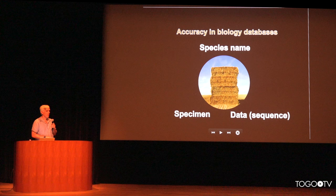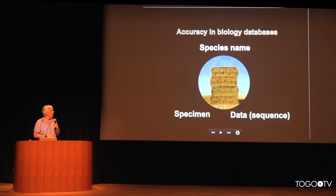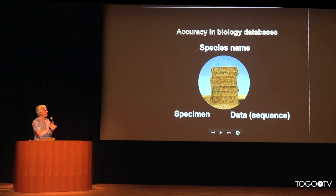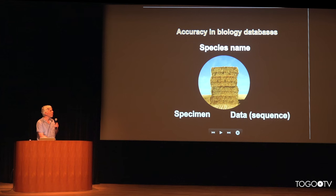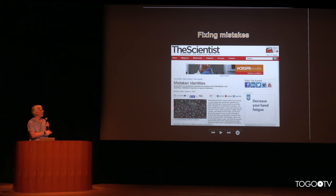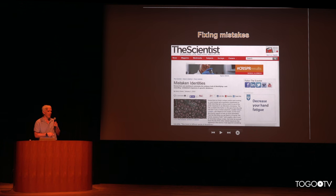Part of the quest for accuracy is that the name is not enough — the name needs to be tied to something. When a species is described, it's always described in relation to a specific specimen. If we have in our database a clear distinction between a species name, a specimen, and the data, we can improve the accuracy of related things by doing comparisons. Here's a recent article in The Scientist magazine bemoaning the fact that there are a number of mislabeled things in the public sequence databases that is affecting accurate science.